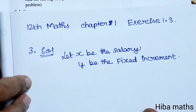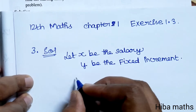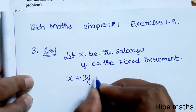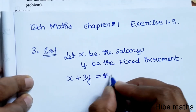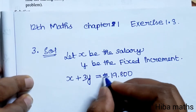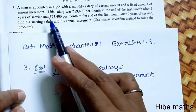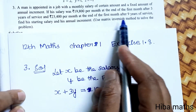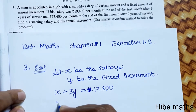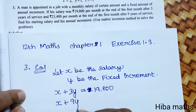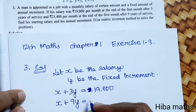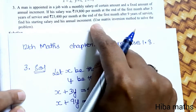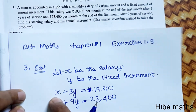So the first equation: after three years, x plus three y equals Rs. 19,800. And Rs. 23,400 per month at the end of the first month after nine years of service, giving x plus nine y equals 23,400. We need to find his starting salary x and his annual increment y.